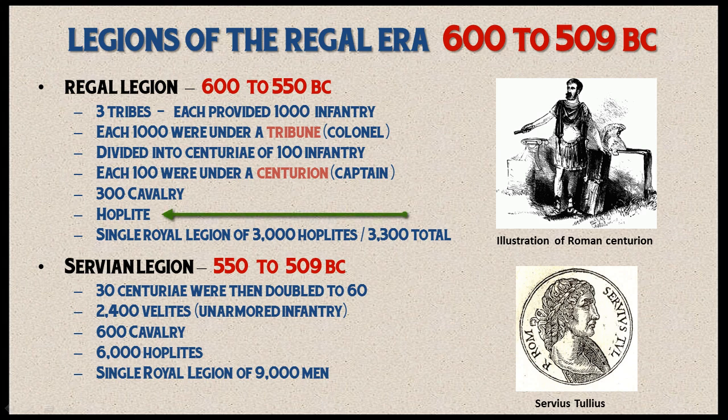You might be wondering what hoplites were doing in the Roman Legion — weren't those part of the Greek phalanx? The answer is that the Greeks began to colonize southern Italy, bringing their style of government, the Greek polis or city-state. As various Italian tribes came into contact with the Greeks, they borrowed that form of government. So Rome owes a lot to the Greeks. The Greek polis was used to organize many early cities in Italy, and so it was only natural that the Romans adopted the Greek phalanx, and with that came hoplites.